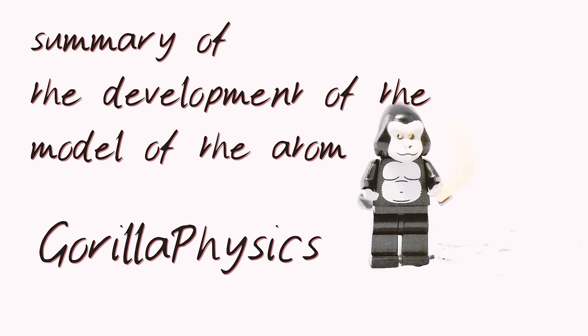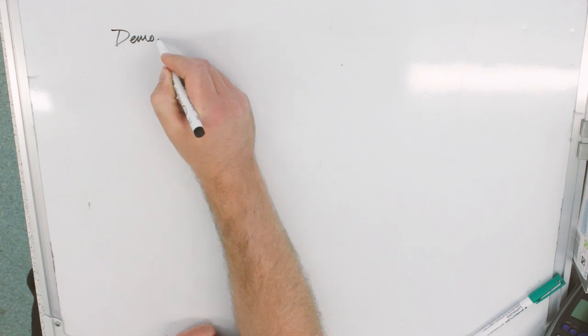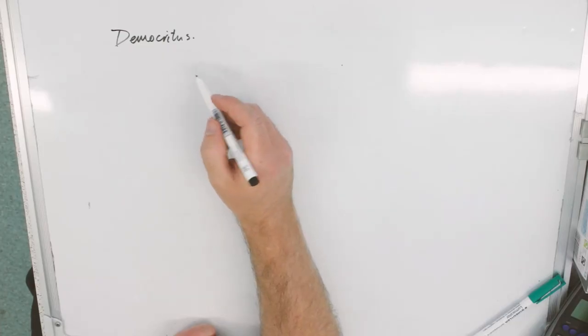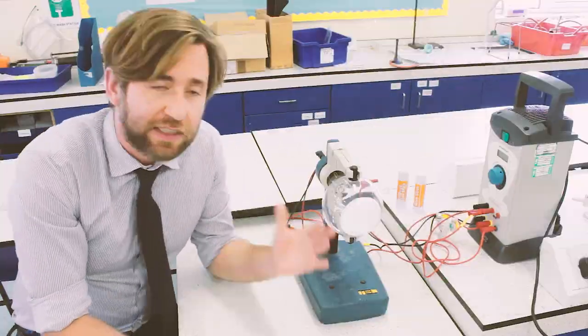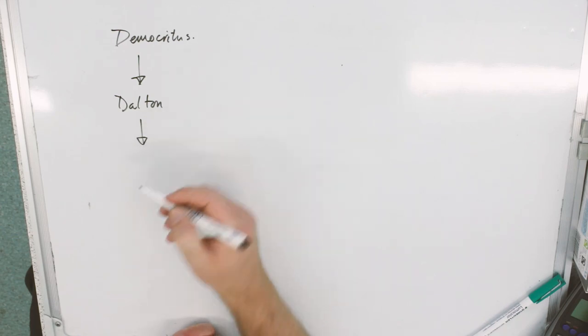This is a really quick summary of how the atomic model has changed over time. I go through all of the models, just the basic details that you need to memorize about each model and the evidence that has led to the models changing. This is appropriate for all of the GCSE courses, and it is also very useful knowledge for A-level students as well.